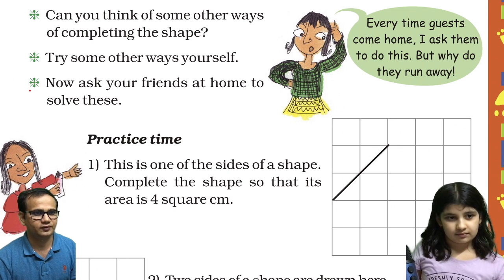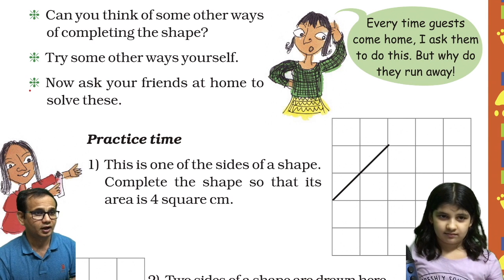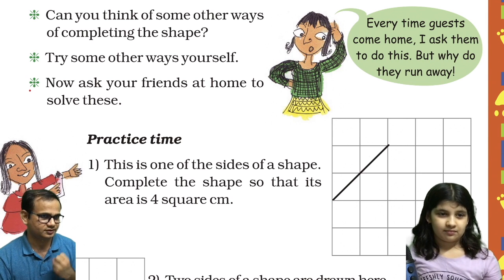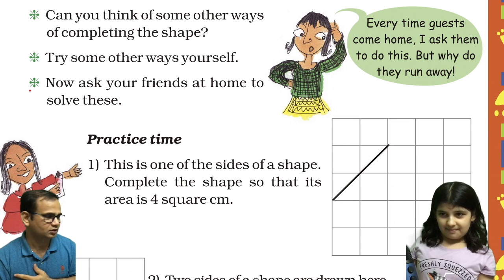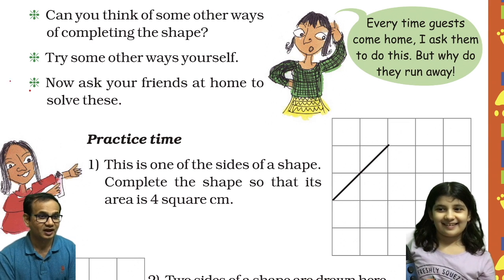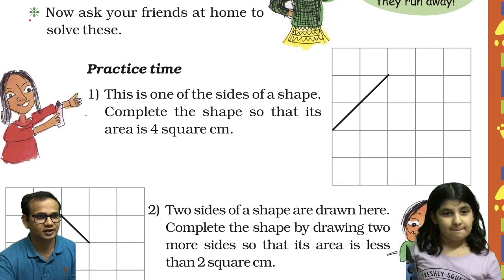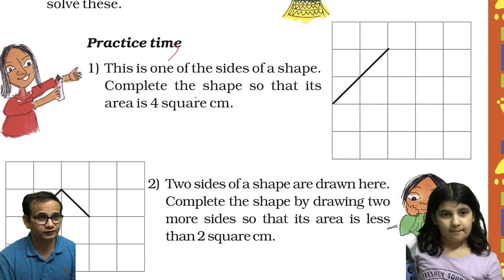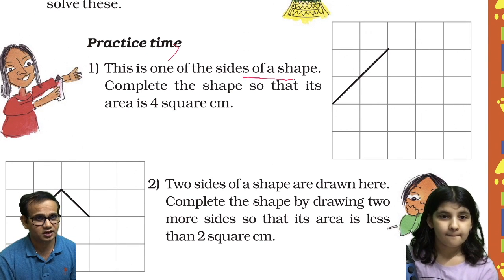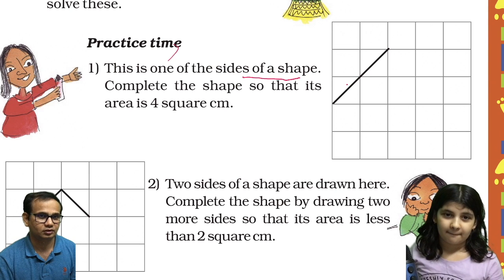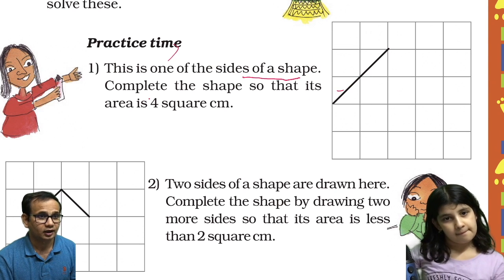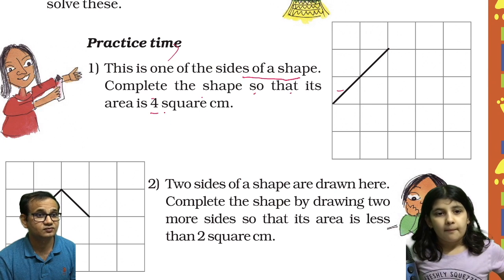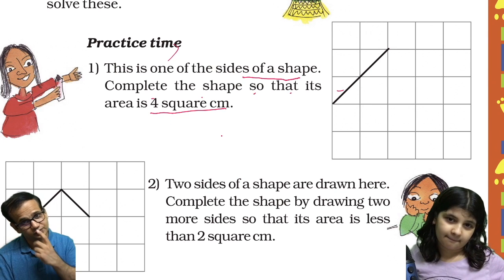Try some other ways yourself. Now ask your friends at home to solve this. Let us do some practice. This is one of the sides of a shape. Complete the shape so that its area is 4 square centimeters. Can you do this, Anusha?